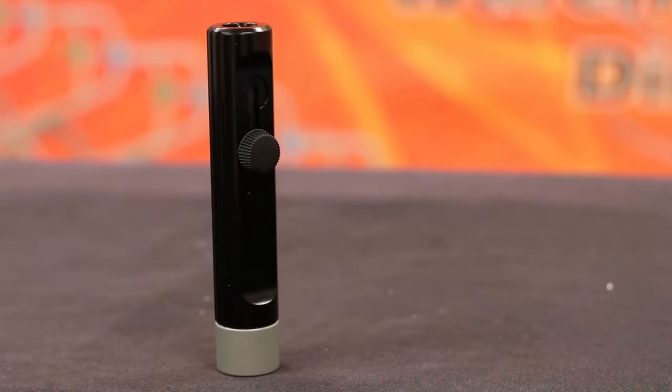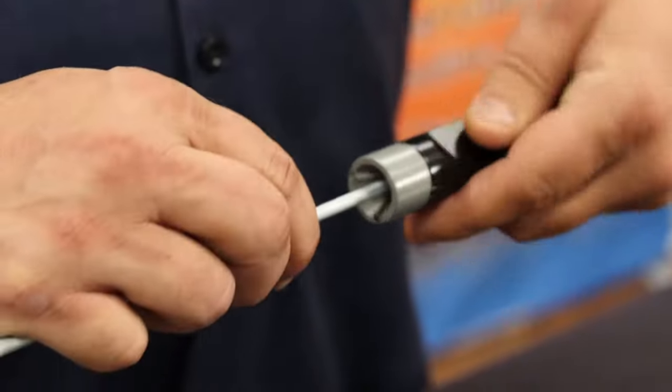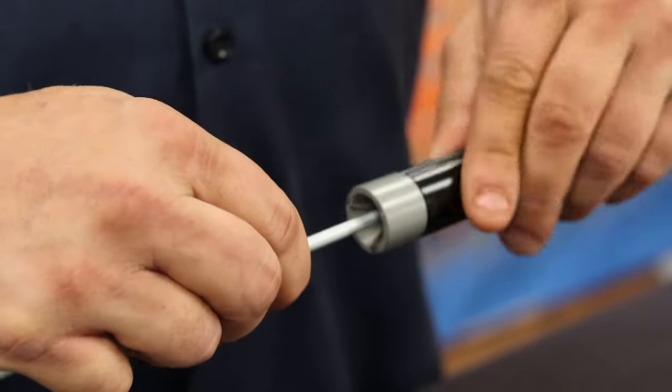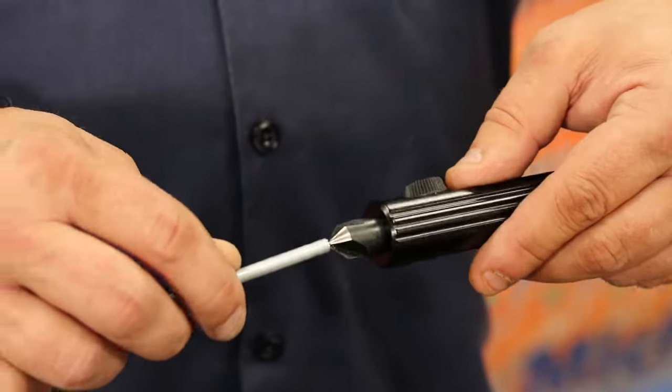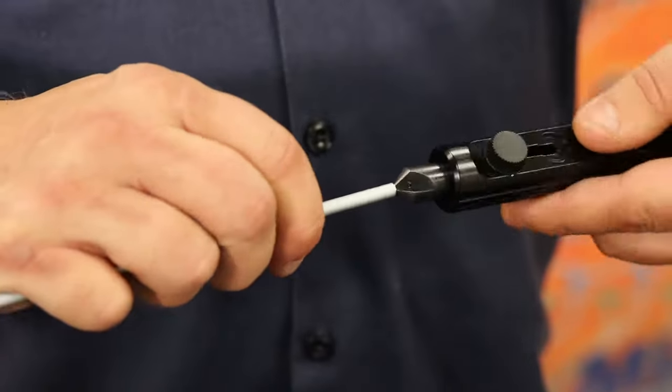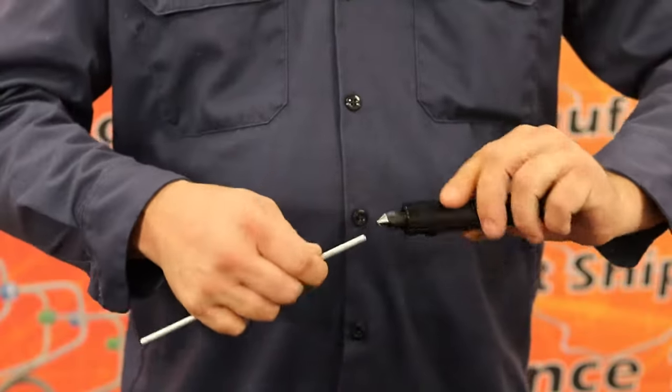Next, the inside and outside can be cleaned using a deburring tool. Using the female deburring end, twist the tool over the end of the tubing to clean the outside radius. Now flip the tool around with the chamfer bit extended and clean any leftover burring on the inside.